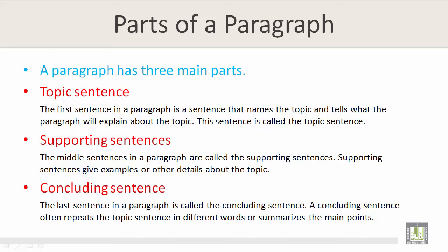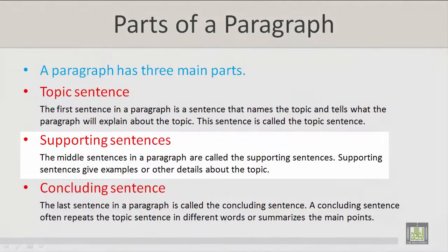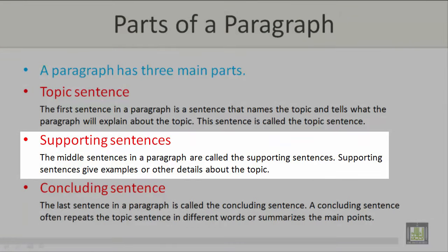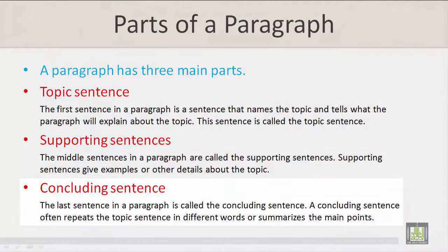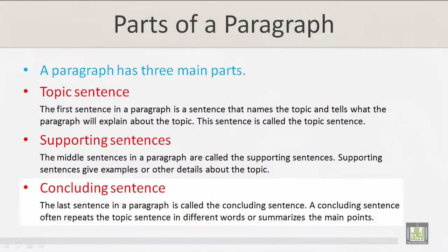Let's take a look at the topic sentence. The first sentence in a paragraph names the topic and tells what the paragraph will explain about the topic — this is called the topic sentence. The middle sentences are called the supporting sentences, which give examples or other details about the topic. The last sentence is called the concluding sentence, which often repeats the topic sentence in different words or summarizes the main points.